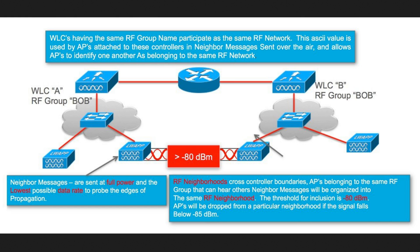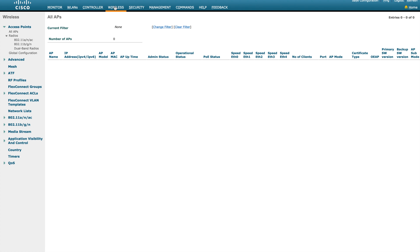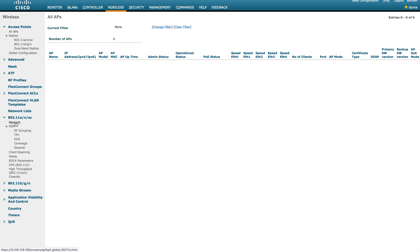If you have a single WLC, all APs participate in the same group. If you have multiple buildings and multiple WLCs, you can put both into the same RF group so all APs function together. Now let's jump into the RRM-specific configuration. I'm going to wireless configuration, and I'll cover this video only with 802.11a — not b/g — since the configuration is essentially a repetition with some value differences.